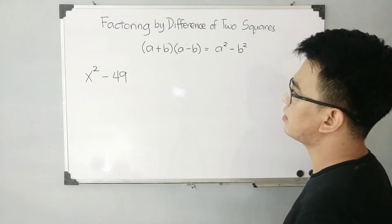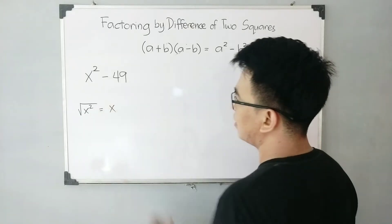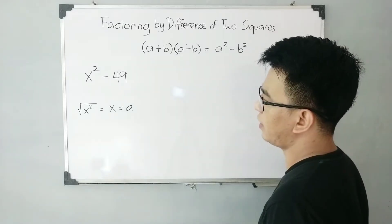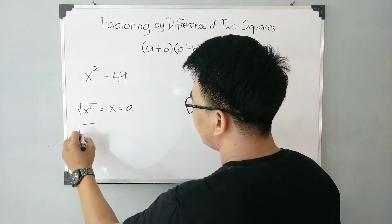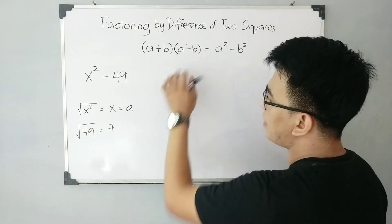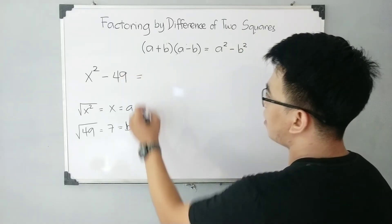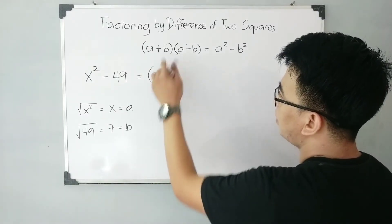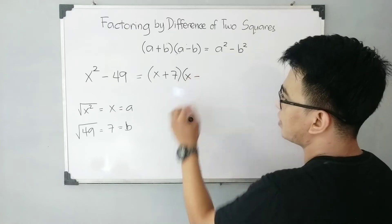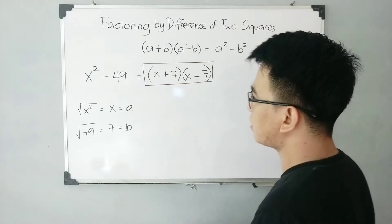How can we apply this pattern to factor out x squared minus 49? First, find the square root of x squared — the square root of x squared is x. So x squared serves as your a squared, meaning x is equal to a. Then get the square root of 49 — since it is a perfect square, the square root is 7, and 7 is your b. Following the pattern of a plus b times a minus b, we can write the factors as x plus 7 times x minus 7. This is the factored form of x squared minus 49.